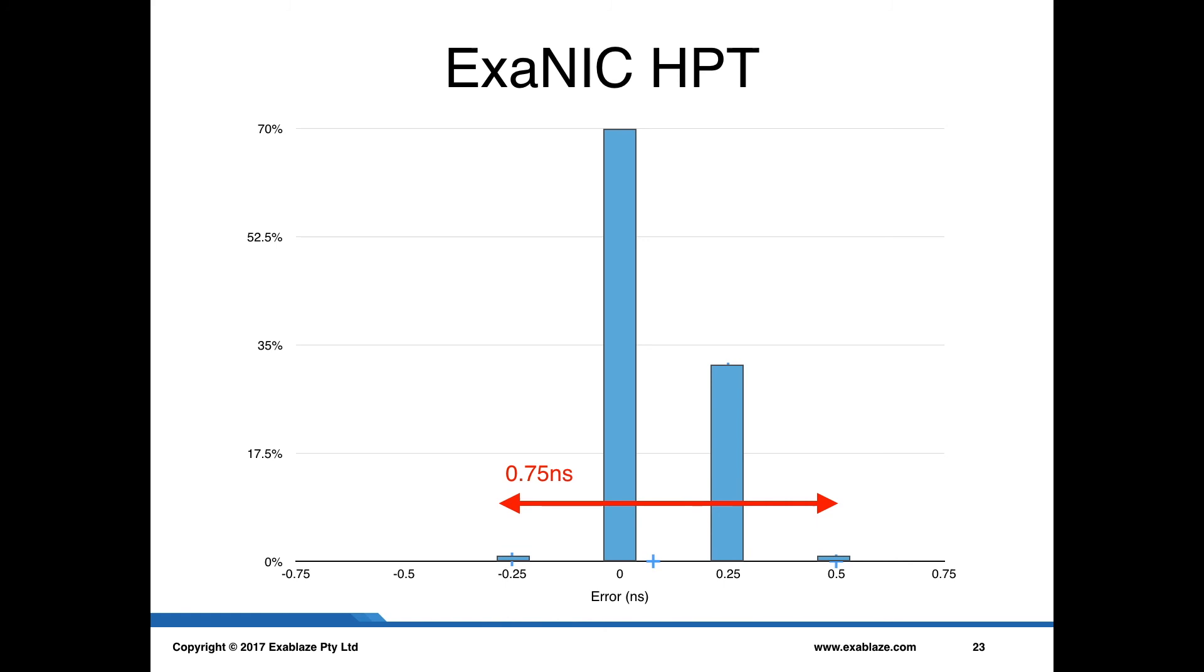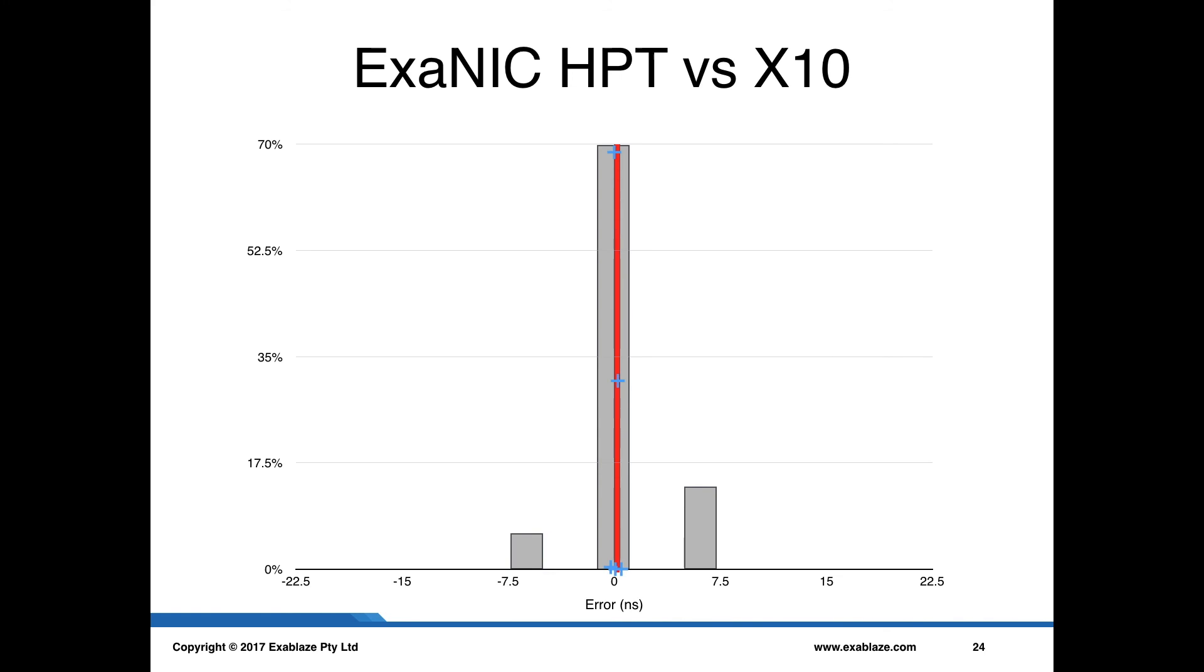Now, this result may not look as impressive as it really is because of the scale that we're looking at. So if we put that on the same scale as the ExaNIC X10, which if you remember from part one was the best performing device that we had, you can see that you can't even actually see the deviation in this device on that same scale.